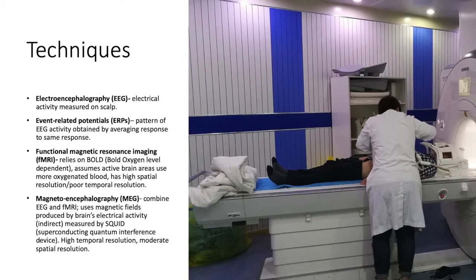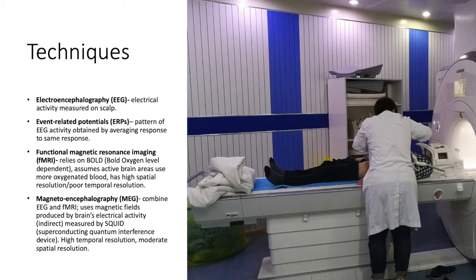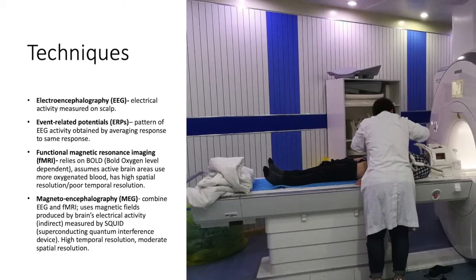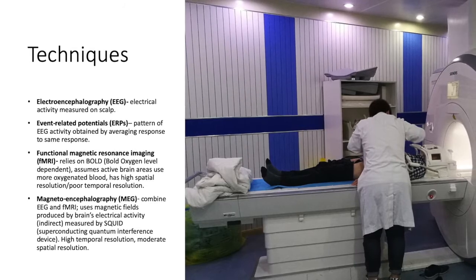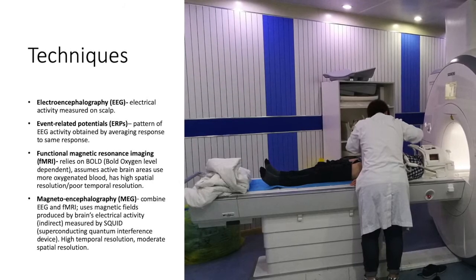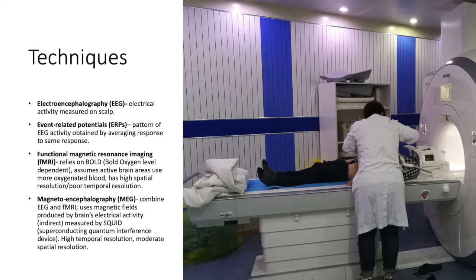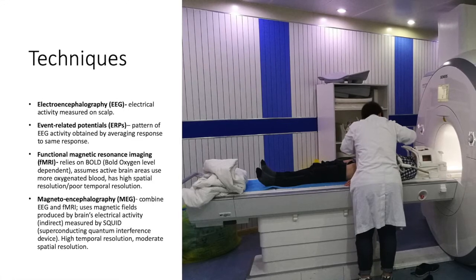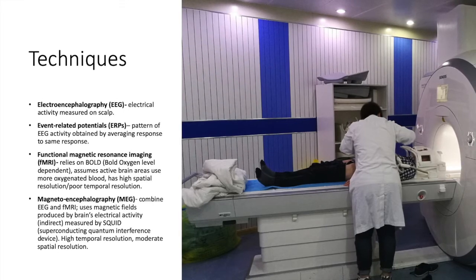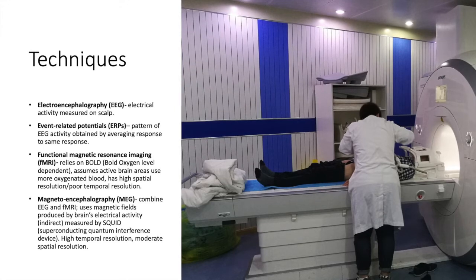MRI relies on magnetic fields and the way water vibrates in order to create a picture of the brain. Magnetoencephalography (MEG) combines aspects of both EEG and fMRI, using magnetic fields produced by the brain's electrical activity. This is measured indirectly by a device known as SQUID — the superconducting quantum interference device — and has high temporal resolution and moderate spatial resolution.